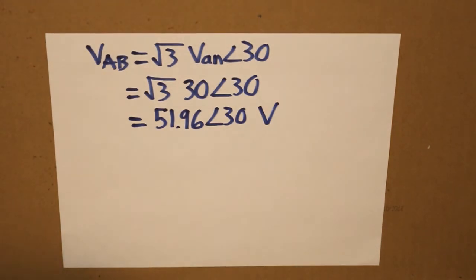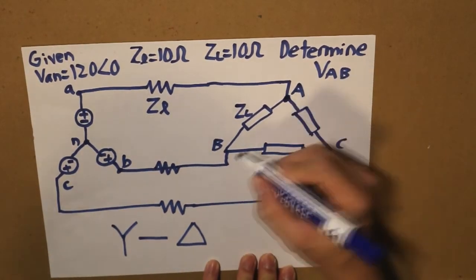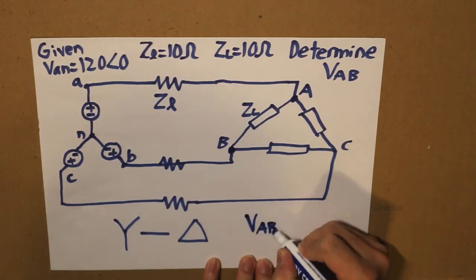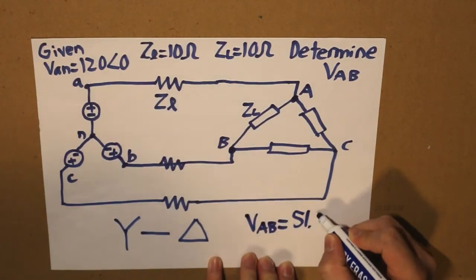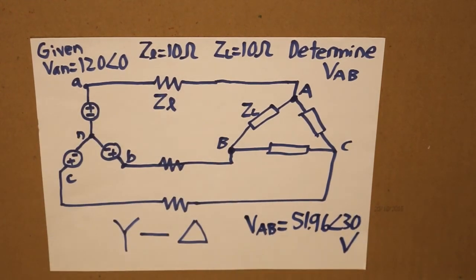So there we go. We found our voltage right here. VAB is equal to 51.96. And that is how we solved our three phase balanced voltage system, Y delta connection. I hope you guys enjoyed this video and I will see you next time.